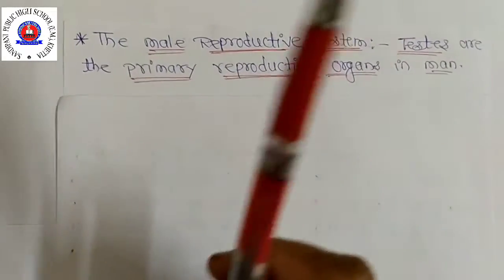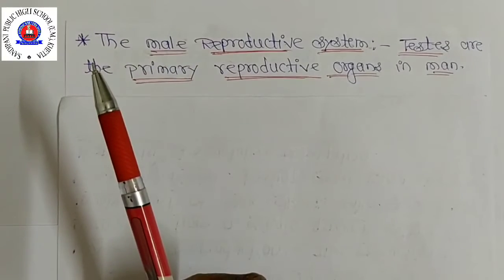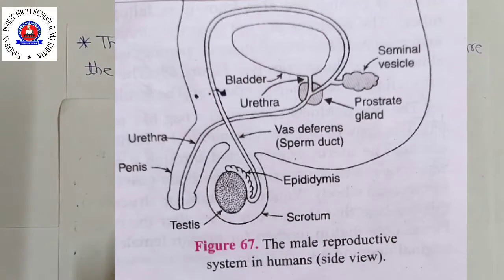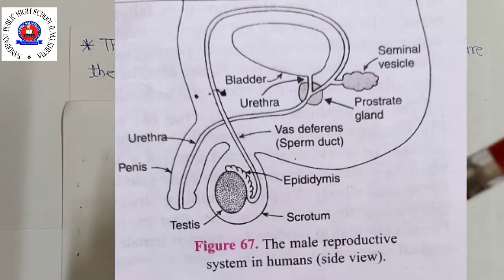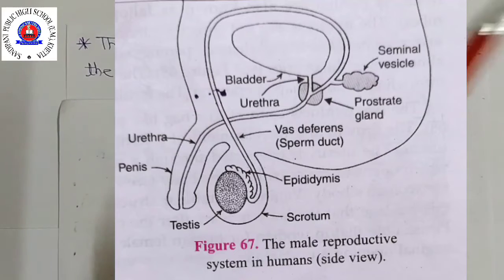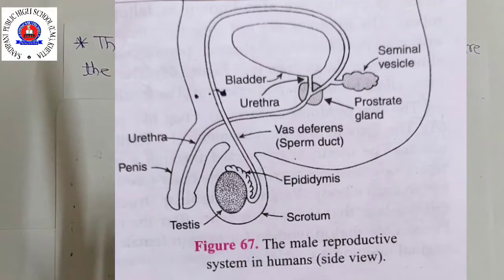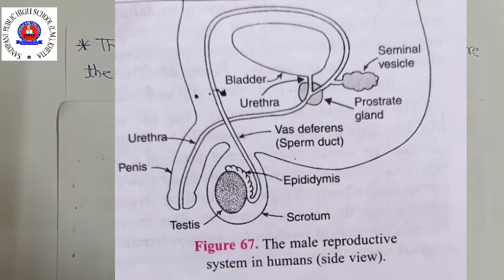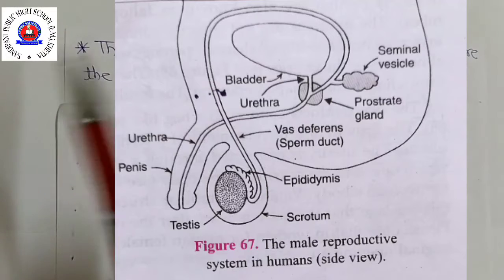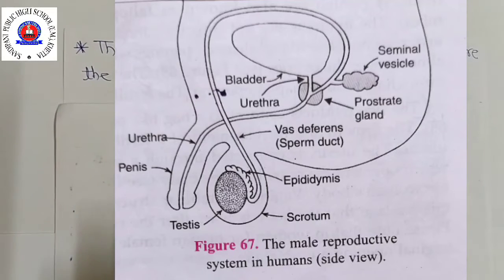The human male reproductive system consists of the following organs: testes, scrotum, epididymis, vas deferens or sperm duct, seminal vesicle, prostate gland, and penis.